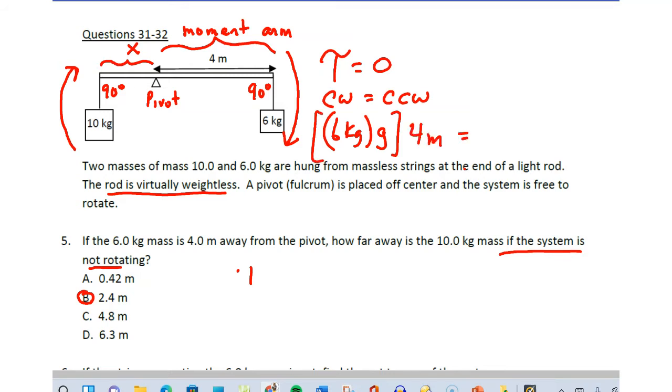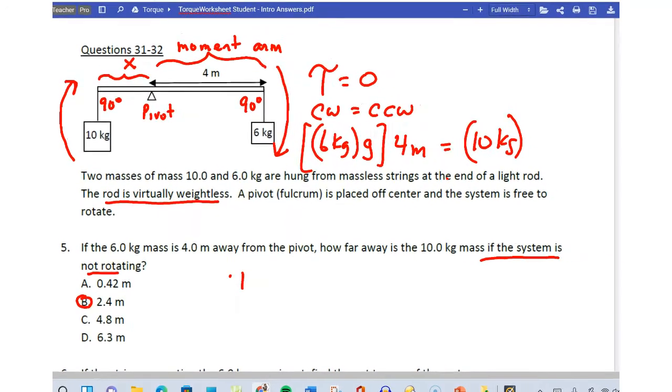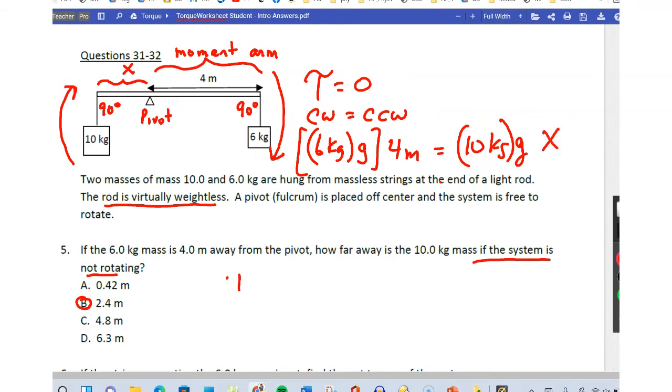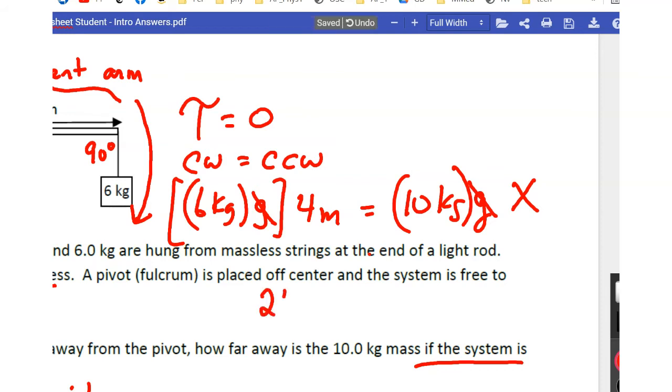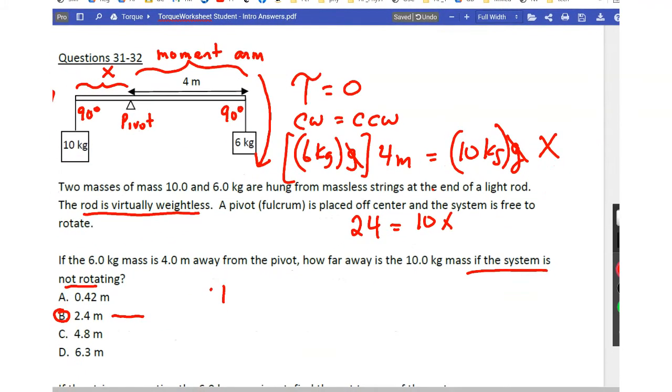Equals 10 kg multiplied by g to make it a force, times this moment arm. Now look at the g's - they cancel out because they're on both sides. So 24 equals 10x, and the moment arm x is 2.4m.